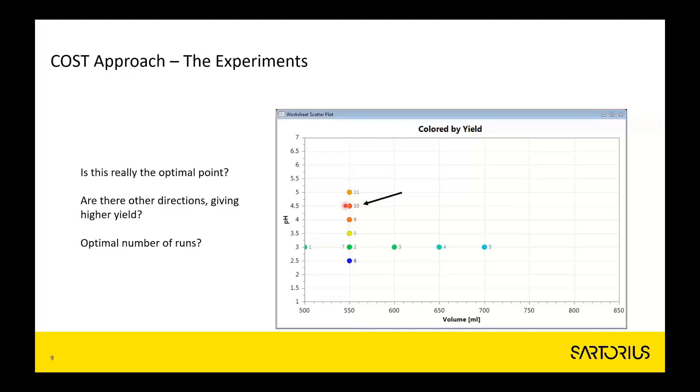Questions we can then ask ourselves: Is number 10 really the optimal point? Would there be other directions or other parts of this scatter graph having higher yields? And what about the number of experiments? Eleven runs—is that high or low?